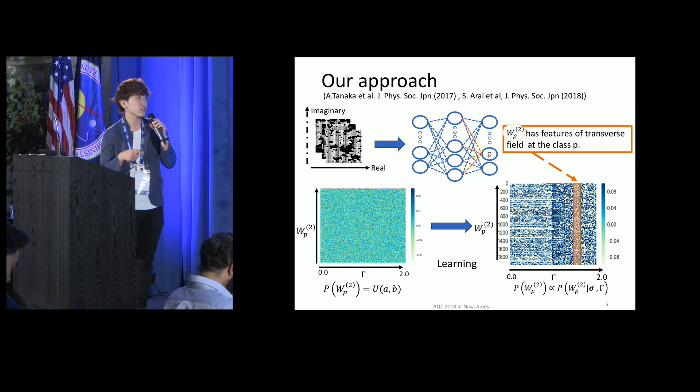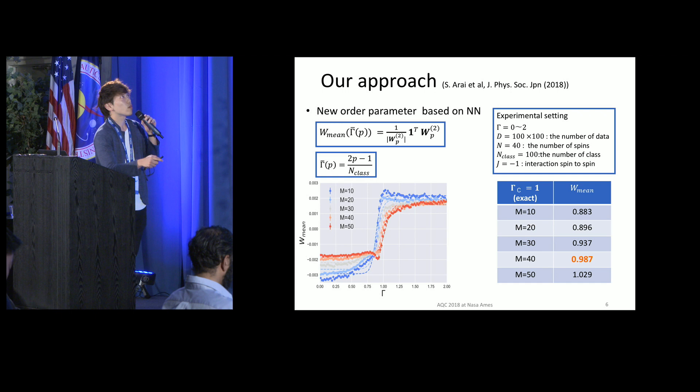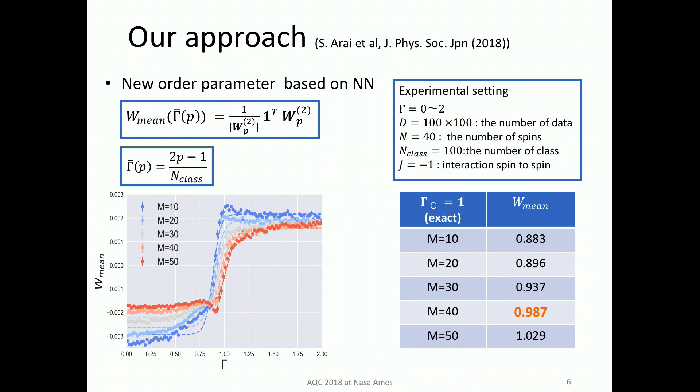To estimate this boundary quantitatively, we define a new order parameter based on the neural network. This new order parameter is an average of the weight parameter at class P. Gamma_P is the strength of the transverse field at class P. And we calculate the order parameter for different total numbers.